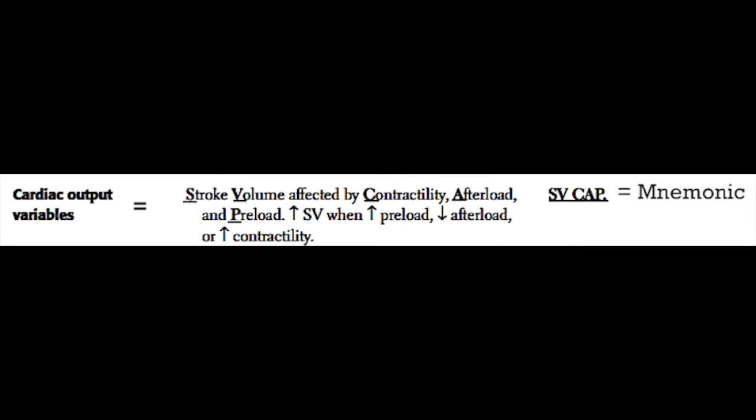Stroke volume is affected by contractility, afterload, and preload. Stroke volume increases with increased preload — this is also known as the Frank-Starling mechanism. Stroke volume also increases with decreased afterload, because the heart has less to pump against and is therefore able to pump more blood out per beat. Remember that afterload is approximately equal to aortic pressure; as aortic pressure increases, the heart has to work harder and stroke volume drops.